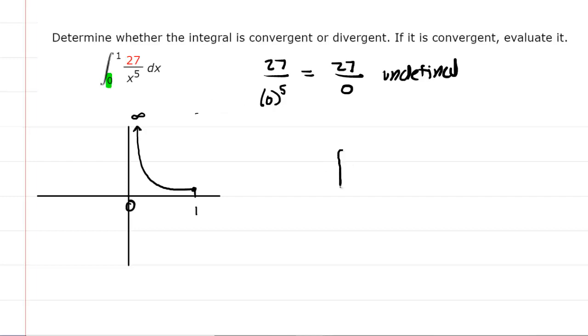Here's what we do. We're going to actually change that lower bound from 0 to t. And this is permissible so long as we take the limit as t approaches 0.